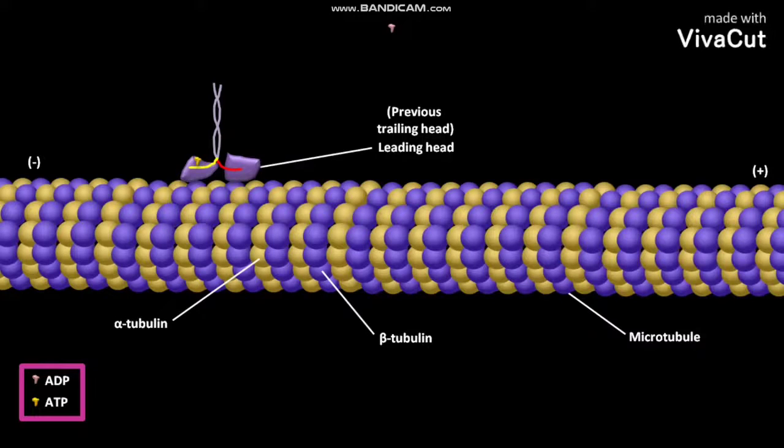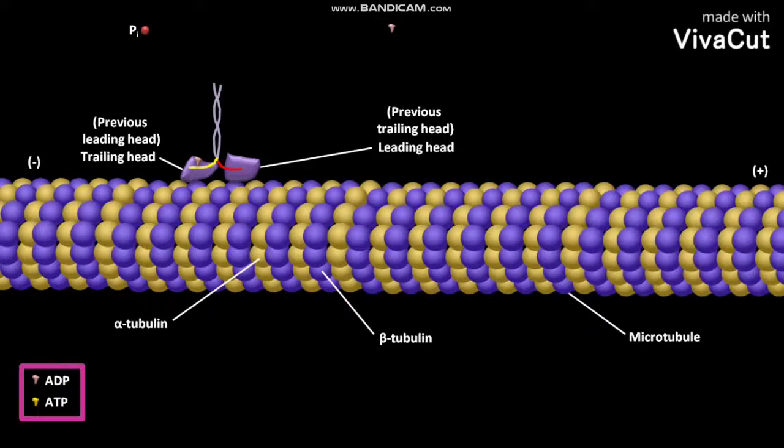This ADP release induces the trailing head which was previously the leading head to hydrolyze its bound ATP to form ADP and PI. The PI is then released. Now, the trailing head can dissociate from the microtubule and this cycle repeats.